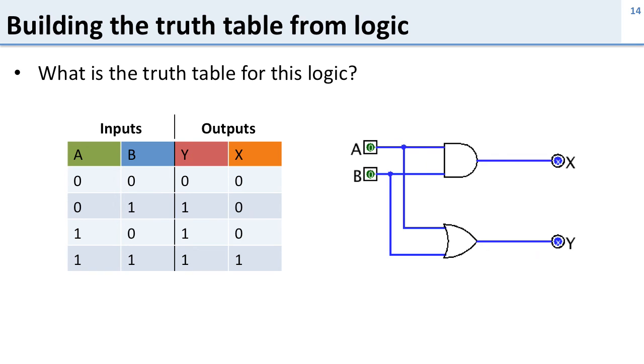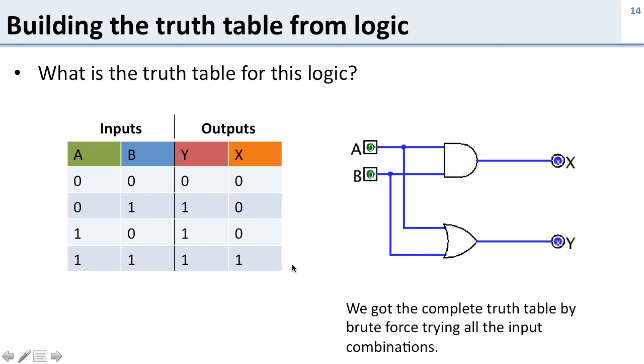Now that we've gone through all the possible combinations, we can fill in the full truth table, and this is what you'd expect. Y is an OR gate, so it's true whenever either one of these is true. X is an AND gate, so it's true only when both of the inputs A and B are true. We got the truth table by trying all the combinations of the inputs and generating all the combinations of the outputs.